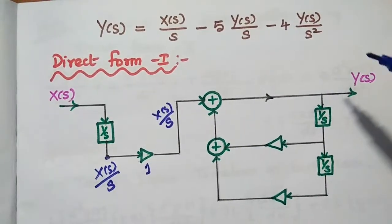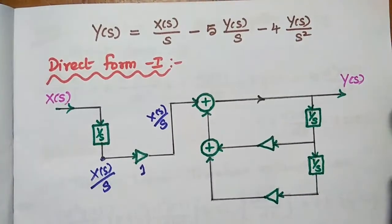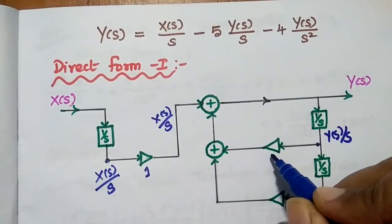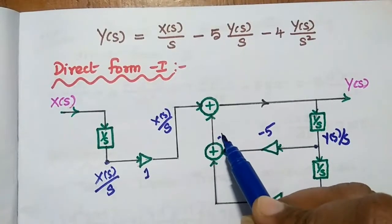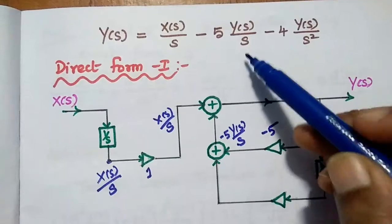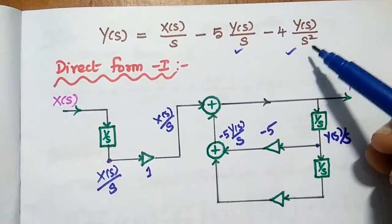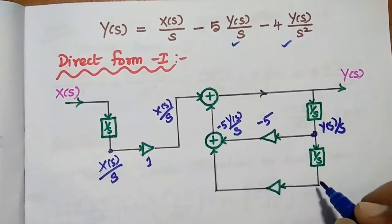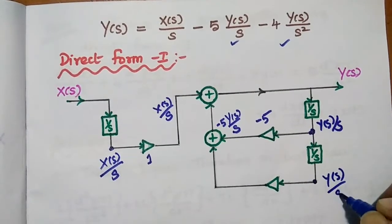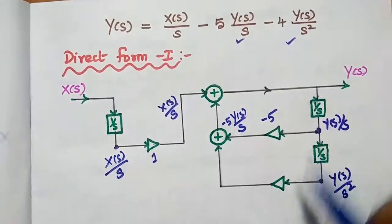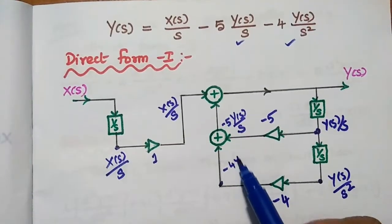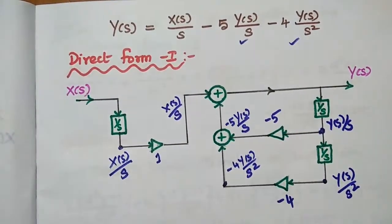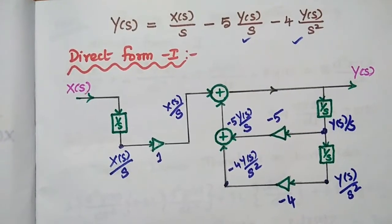These two terms are in terms of Y of S — the output. We take Y of S and give it to a 1 by S block to get Y of S by S, multiplied with minus 5 to get minus 5Y of S by S. Then we give that to another 1 by S block to get Y of S by S squared, multiplied with minus 4 to get minus 4Y of S by S squared. All three terms — X of S by S, minus 5Y of S by S, and minus 4Y of S by S squared — are added together at the summing junction to give the actual output Y of S. This is the direct form 1 realization for the given differential equation.